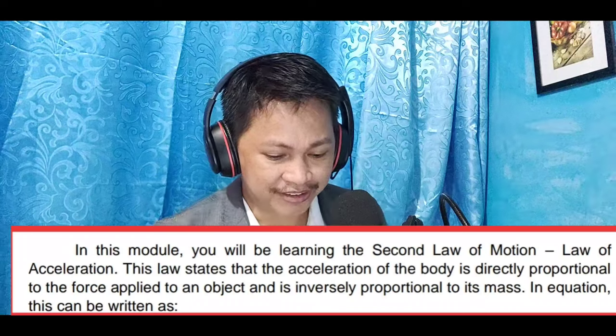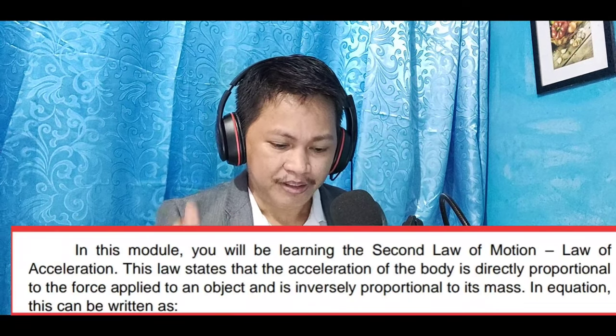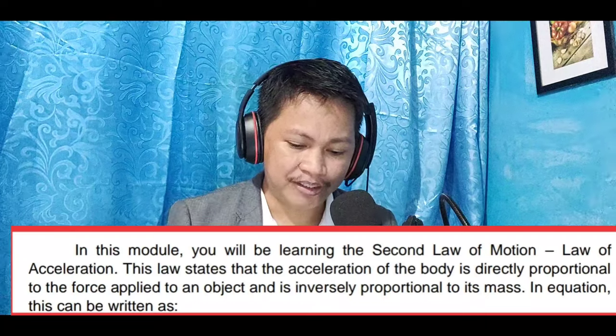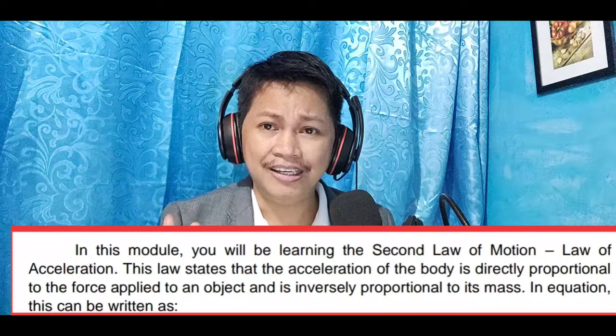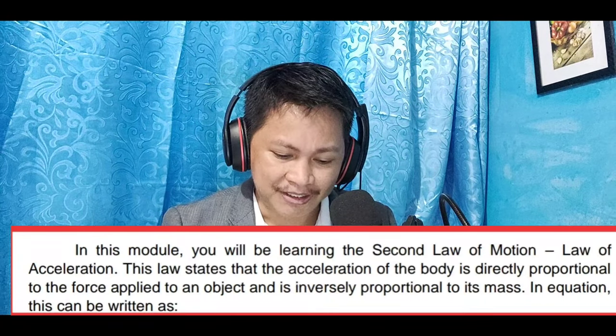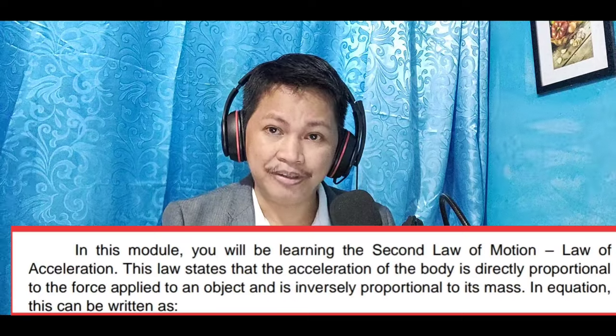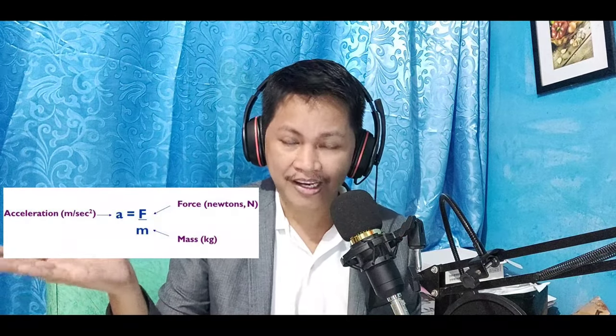In this module you will be learning the second law of motion. Its definition states that the acceleration of a body is directly proportional to the force applied to an object and inversely proportional to its mass. In equation form, this is written as: a = F/m, or acceleration is equal to force divided by mass. We need to familiarize ourselves with how each quantity is represented.